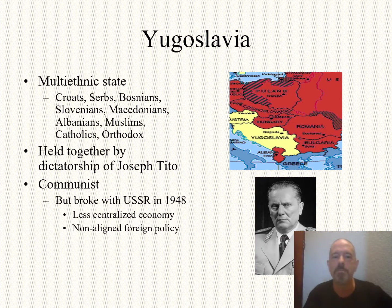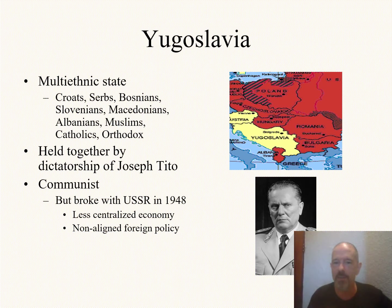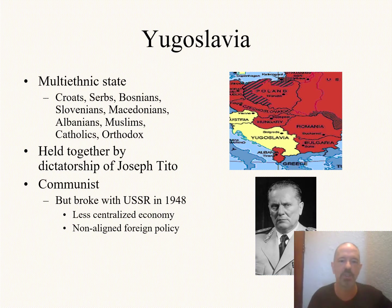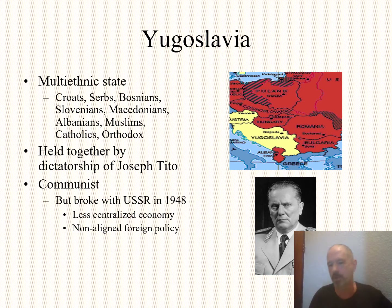Yugoslavia — the one major exception. Yugo means Southern, Slav means Slavic peoples, formed after World War I. Unbelievably diverse — there are Croats, Serbs, Bosnians, Slovenians, Macedonians, Albanians. There are Muslims, Catholics, Eastern Orthodox Christians. The guy that takes over is Joseph Tito, who was a communist fighter against the Nazis in World War II.